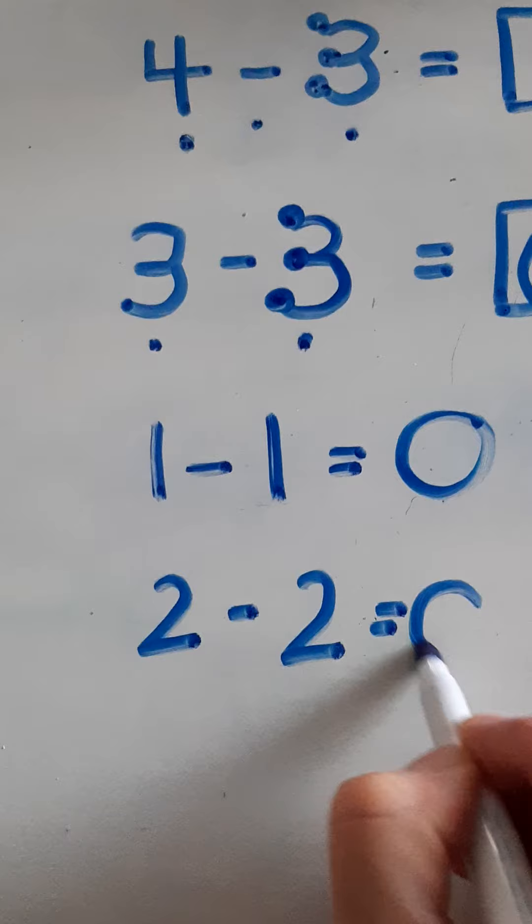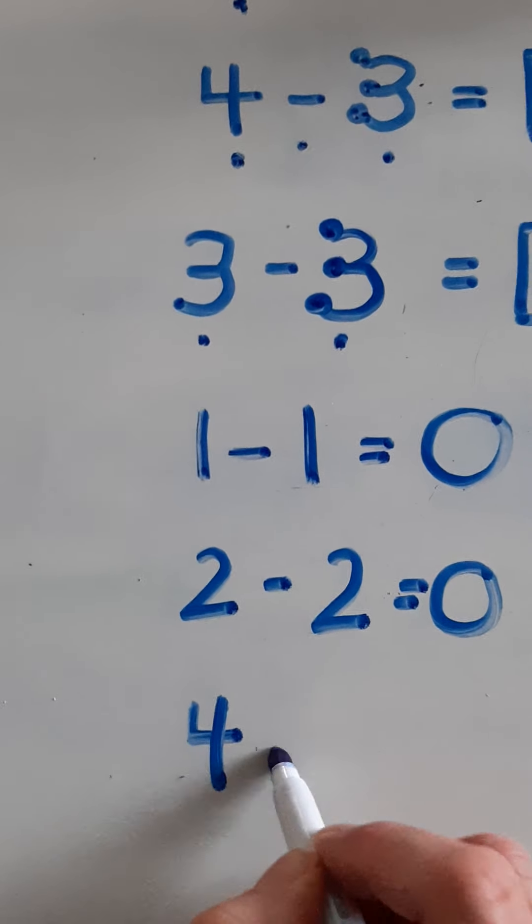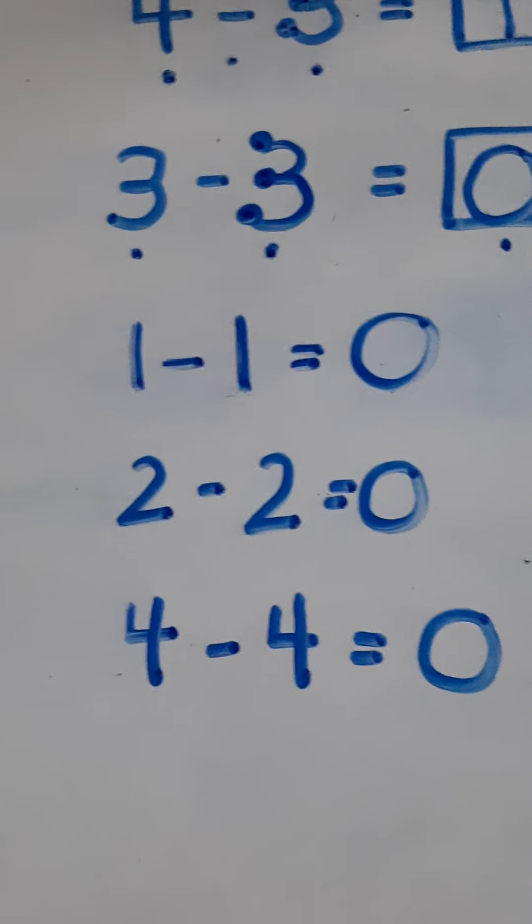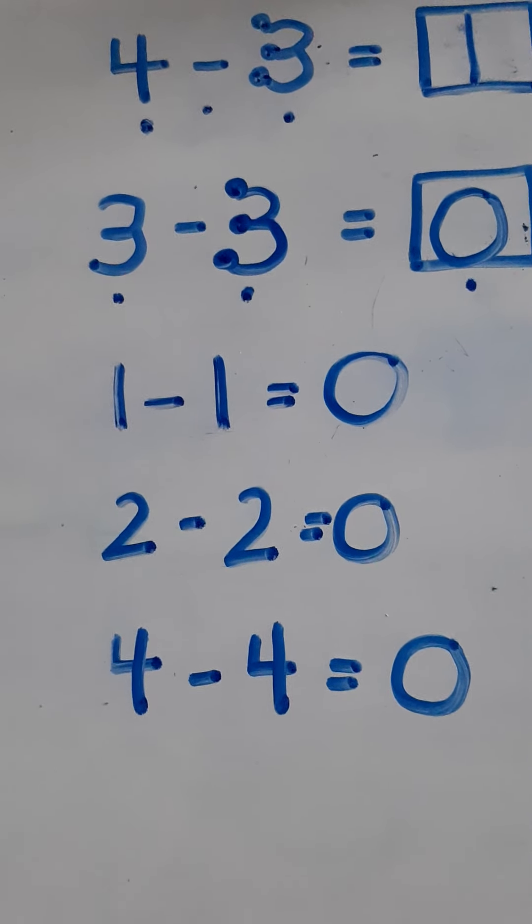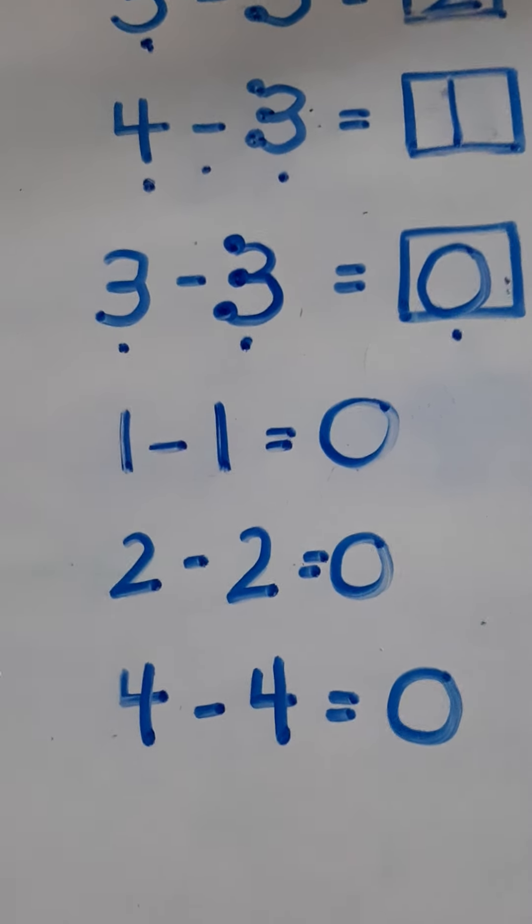Here's another trick for when you're doing takeaway questions. Whenever you start with a number and you subtract that exact same number, the answer is always zero. So if I were to do 1 take away 1, that would be 0. Two take away 2 would be 0. We already know 3 take away 3 equals 0. Four take away 4 equals 0. So anytime you're taking a number and subtracting that number, the answer is always zero.